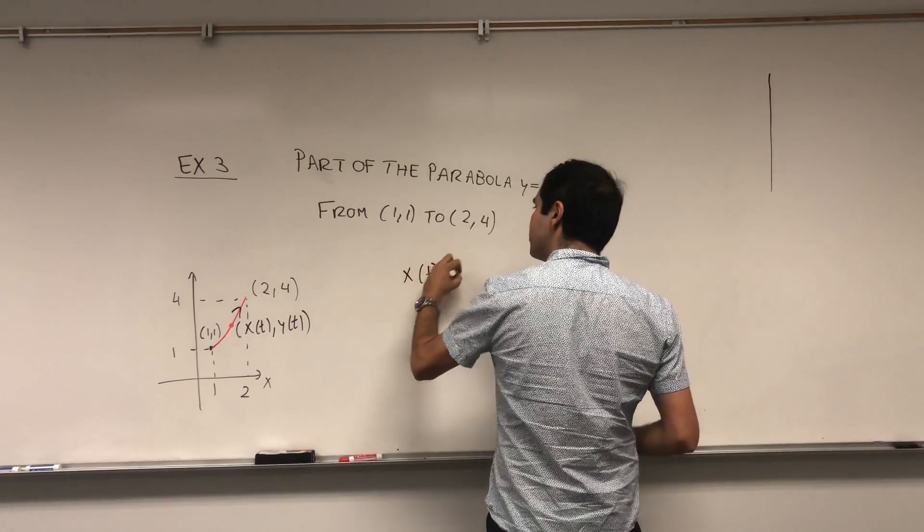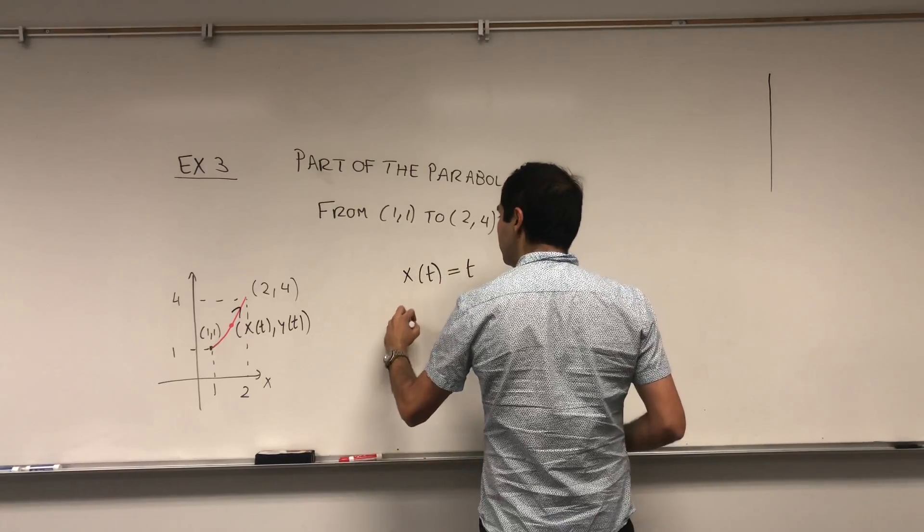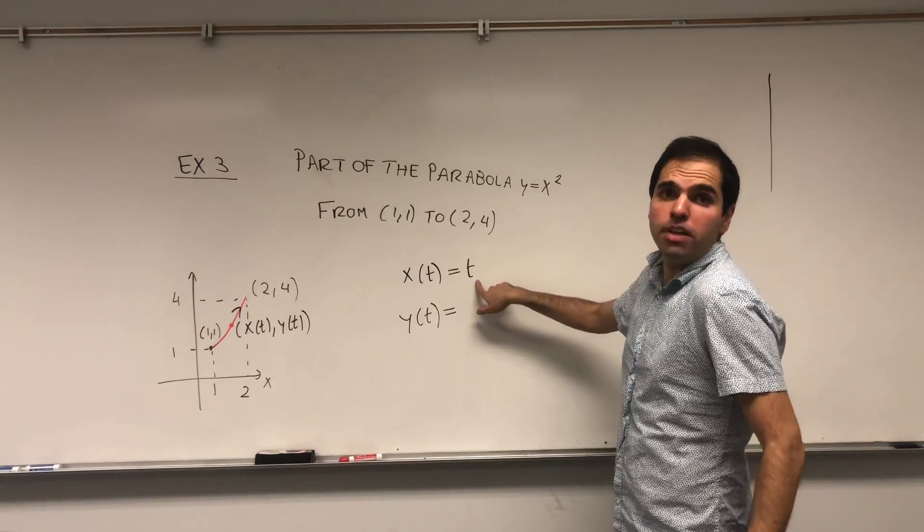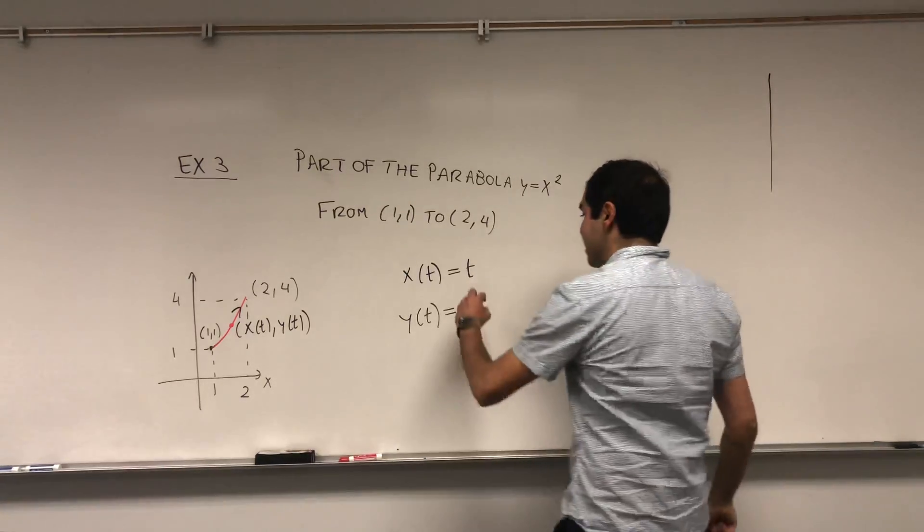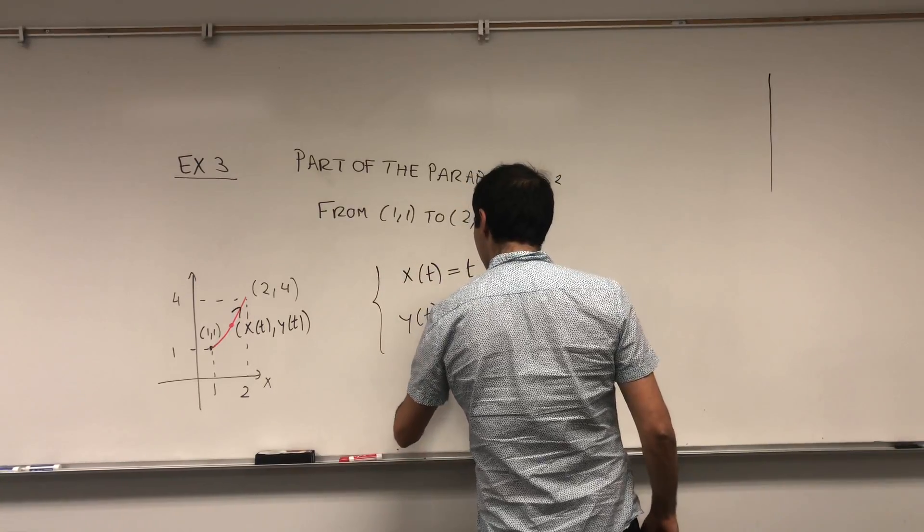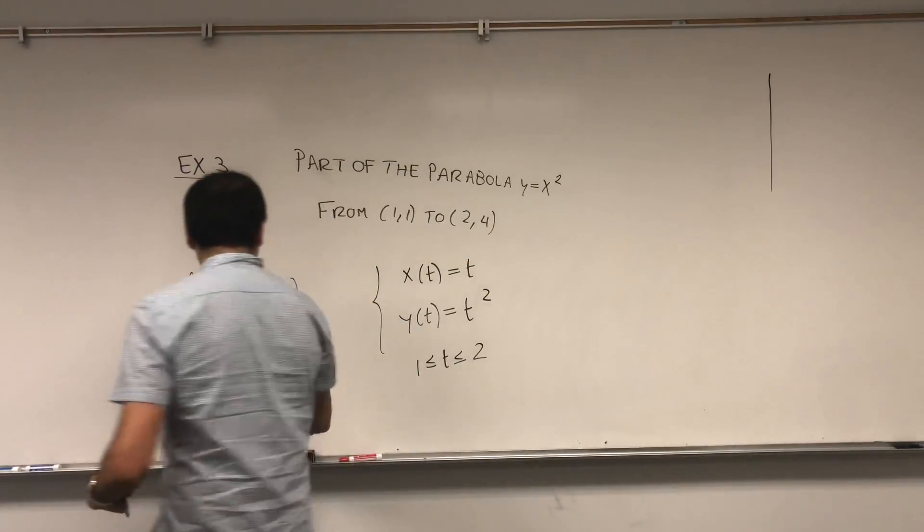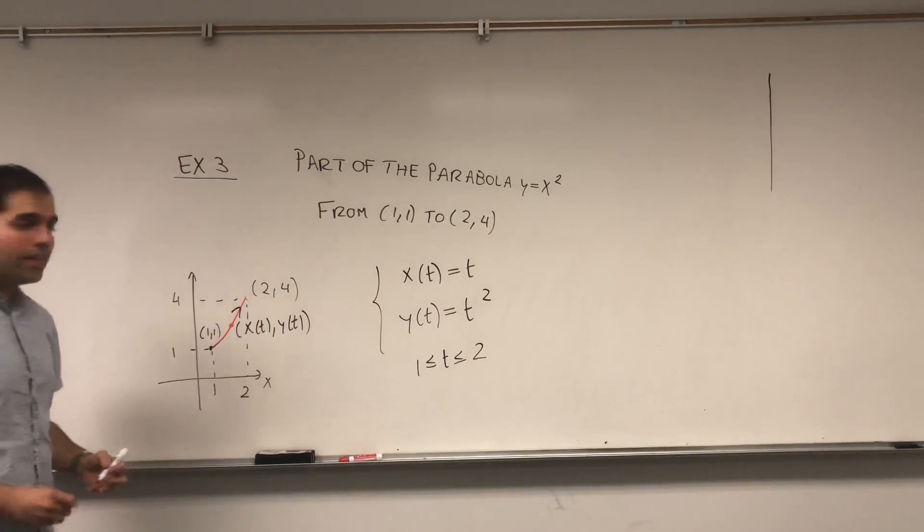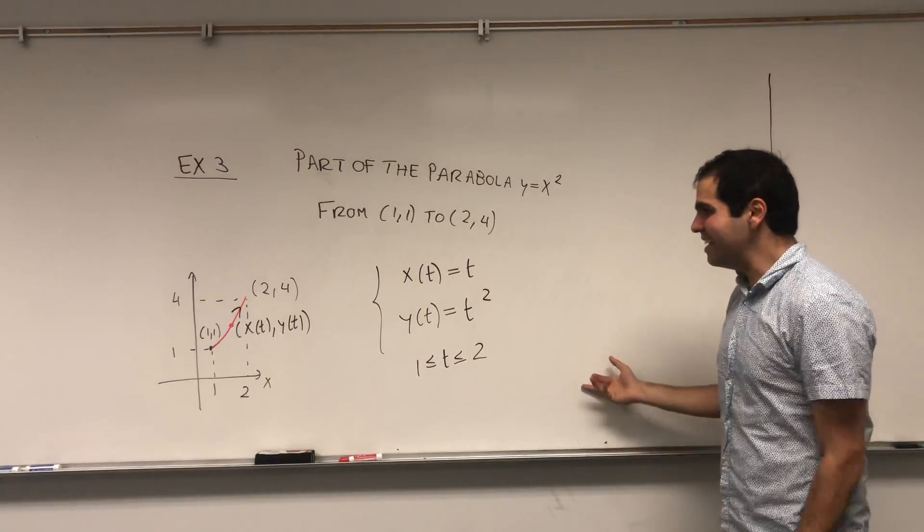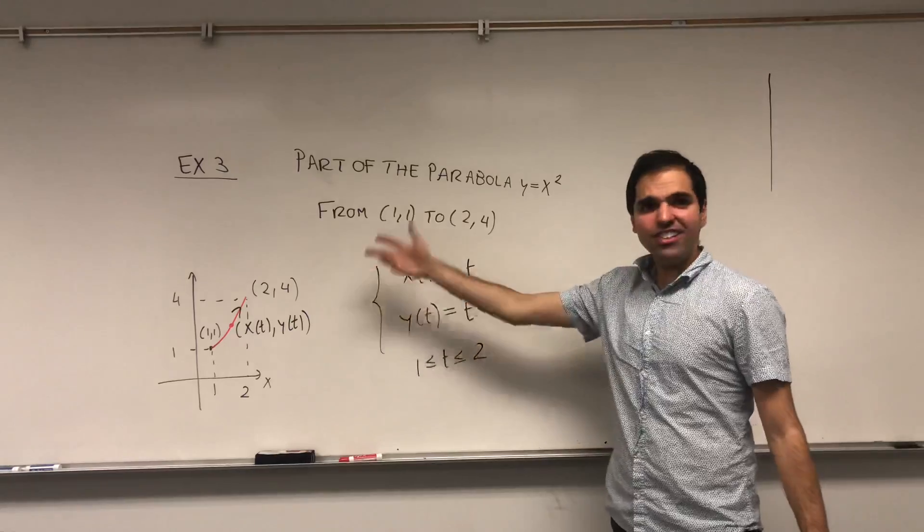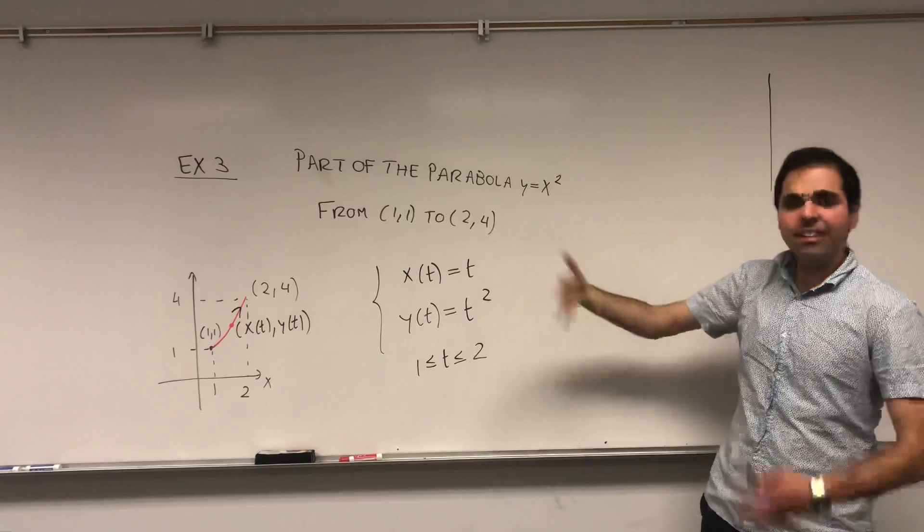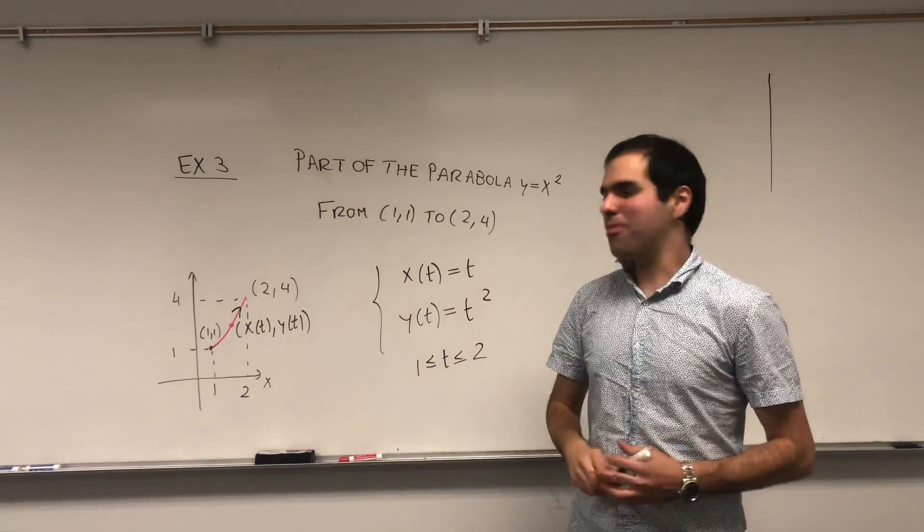But what I'm trying to make the point of is functions are very easy to parameterize. Namely, the way you would do it, you would just let x of t to be t, and then y is what? Well, it's just x squared, which here becomes t squared, because x is t. And lastly, t goes from what to what? Well, it just goes from 1 to 1, 1 to 2, because x is between 1 and 2. What's the point? The point is, again, functions are very easy to parameterize. In particular, any function has a parametric equation. That's not a problem.